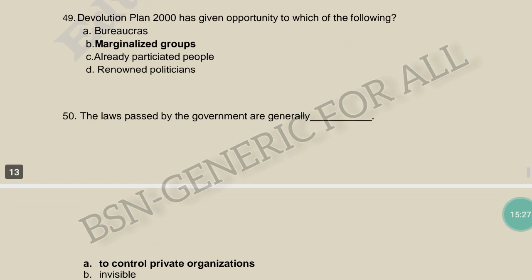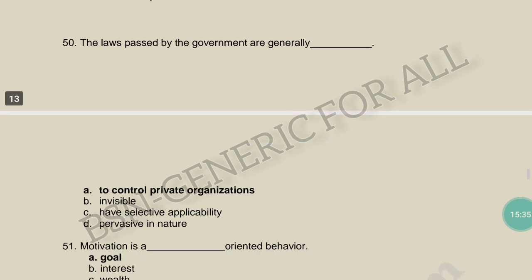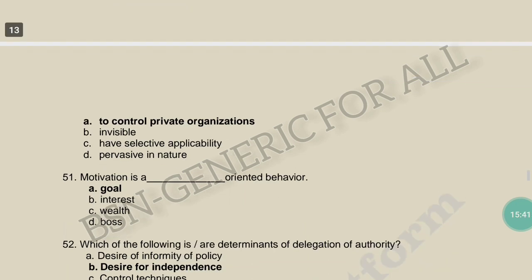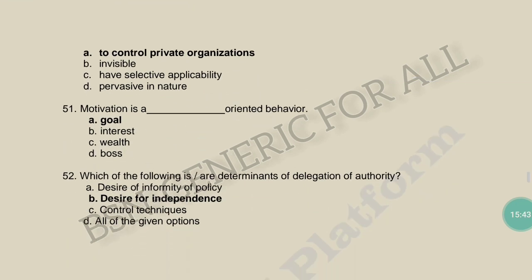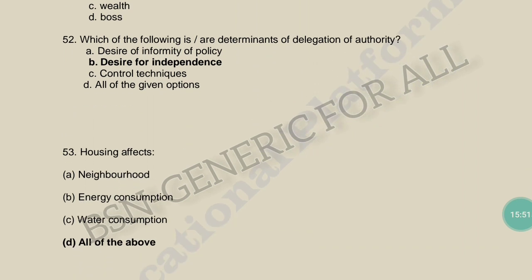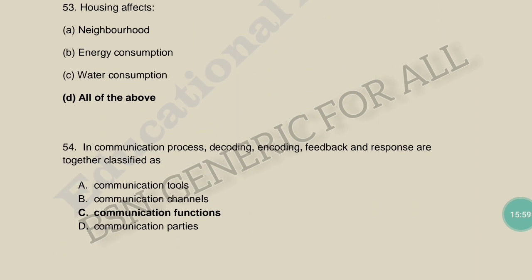The laws passed by the government are generally pervasive in nature to control private organizations. Motivation is a goal-oriented behavior. Which of the following is a determinant of delegation of authority? Desire for independence. Housing affects neighborhood energy and water — all of the above. In the communication process, decoding, encoding, feedback, and response are together classified as communication functions.